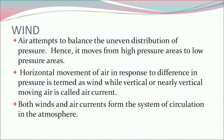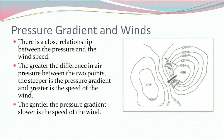Now let's discuss wind. Air attempts to balance the uneven distribution of pressure, hence it moves from high pressure areas to low pressure areas. This horizontal movement of air in response to difference in pressure is termed as wind, while vertical or near-vertical moving air is called air current. Both winds and air currents form the system of circulation in the atmosphere. There is a close relationship between pressure and wind speed. The greater the difference in air pressure between two points, the steeper is the pressure gradient and greater is the speed of the wind. The gentler the pressure gradient, the slower is the speed of the wind.